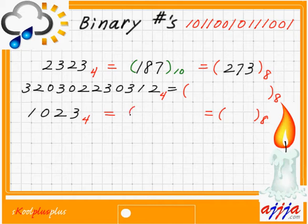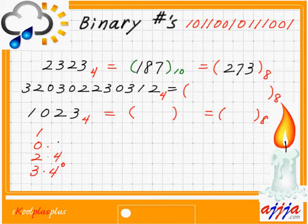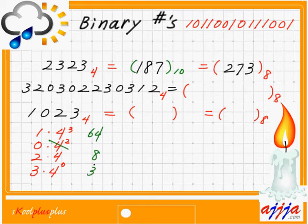We're going to change this one to a decimal number first. So: 1, 0, 2, and 3 — times 4 to the 0 power, times 4 to the 1st power, times 4 to the 2nd power, times 4 to the 3rd power. The answers are 64, 0, 8, and 3. Adding everything: 64 + 8 + 3 = 75. So the decimal number is 75.